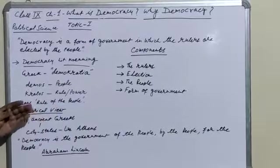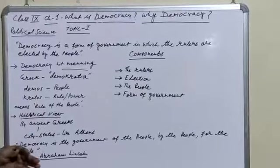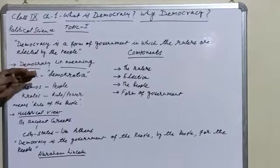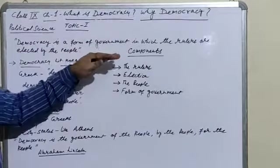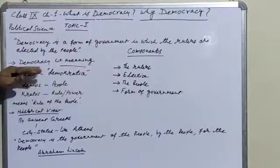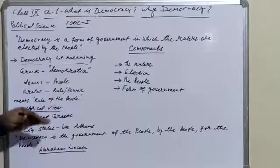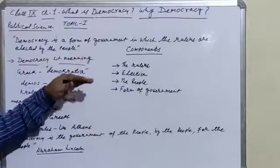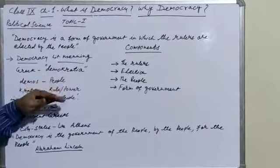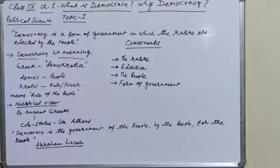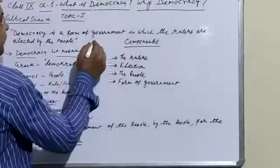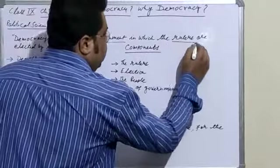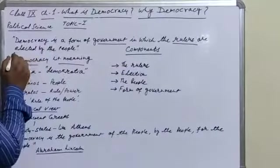The first question is: what is the meaning of democracy, what is democracy? The first definition given here is: democracy is a form of government in which the rulers are elected by the people. Some keywords we find here — government, rulers, and elected or election.